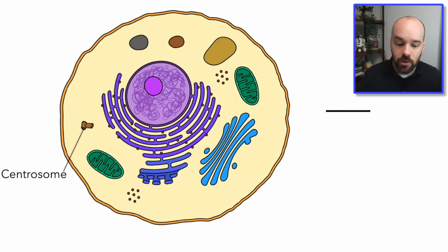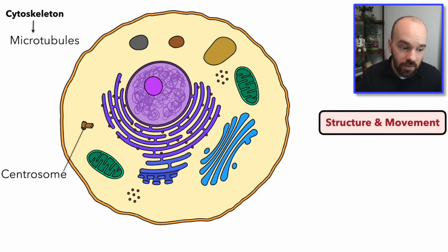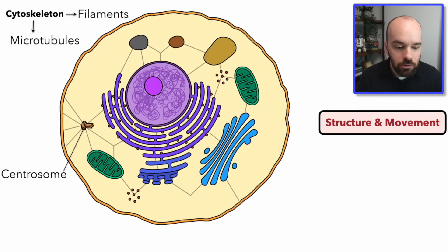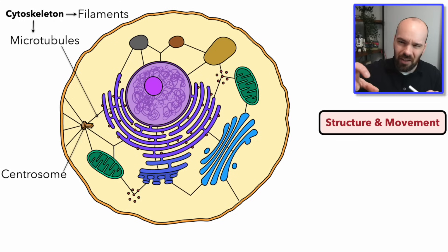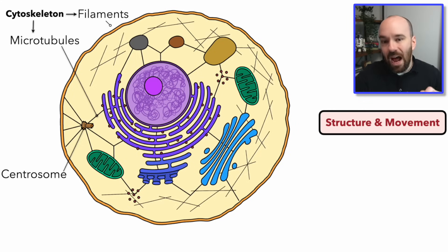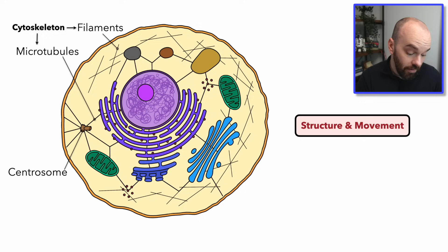Our next function is structure and movement. The first structure gives the cell its shape — that's the cytoskeleton, the skeleton of the cell — and it's made of two main parts: microtubules and filaments. The microtubules are these long thin fibers that originate from the centrosome and connect all the organelles together, so organelles aren't just free-floating around the cell. They're held in place by these microtubules, and those microtubules are made of proteins. On the outside of the cell we have filaments — intermediate filaments closer to the microtubules, and microfilaments more on the outside of the cell against the cell membrane.